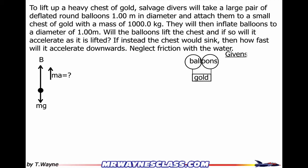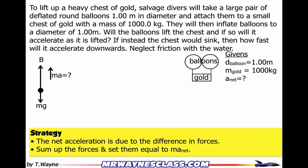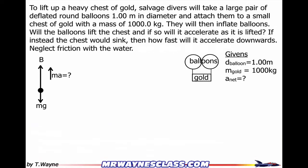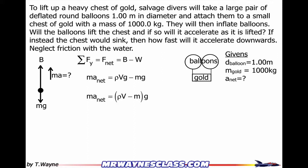My givens are the diameter of the balloon and the mass of the gold, and I'm looking for the net acceleration. Here's my strategy: the net acceleration is due to the difference in forces, so I'll sum up the forces and set them equal to ma net. Summing forces in the y-direction gives F_net equal to the buoyancy force minus the weight, so net force equals ρVg minus mg. Using the distributive property to factor out g, I can then solve for acceleration by dividing both sides by the mass.